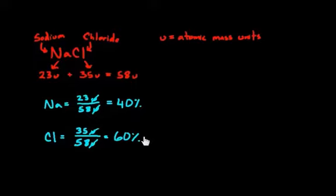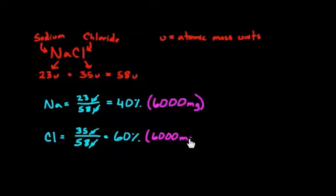Got it. Now, I have to go back to my teaspoon. In my teaspoon, I had 6 grams or 6,000 milligrams. So in that teaspoon, I can just multiply it by these numbers to figure out how much of the weight comes from the sodium and how much comes from the chloride.